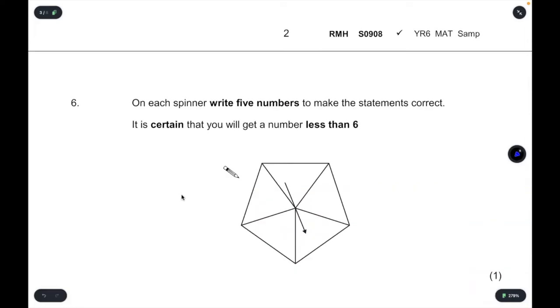Question 6. On each spinner, write five numbers to make the statements correct. It is certain that you will get a number less than 6. If it is certain, that means 100% chance that you will get a number less than 6, meaning that all of the numbers you have here have to be less than 6. So I could just say 1, 2, 3, 4, 5, and all of them are less than 6. It doesn't matter what I pick. The number will be less than 6.